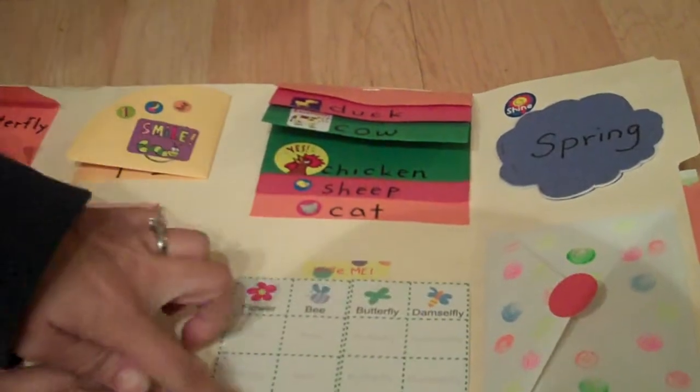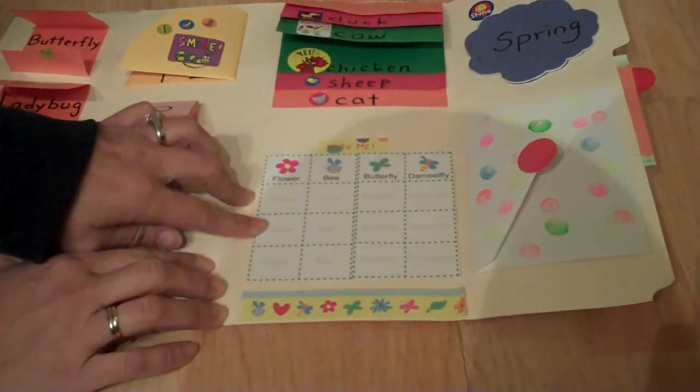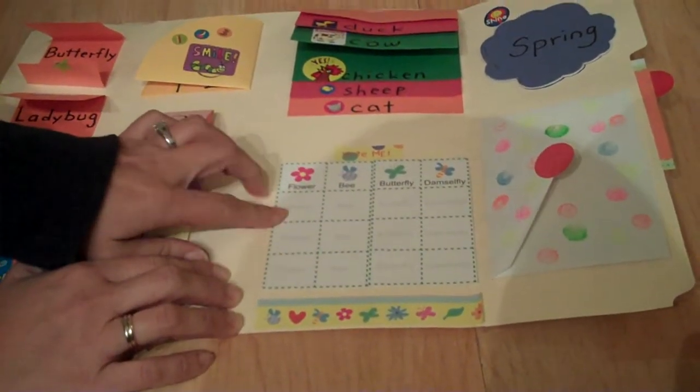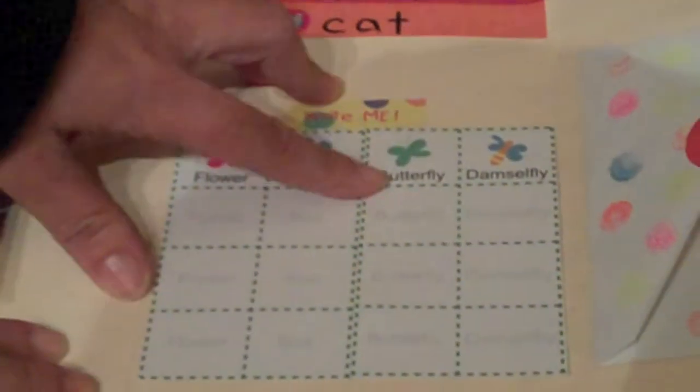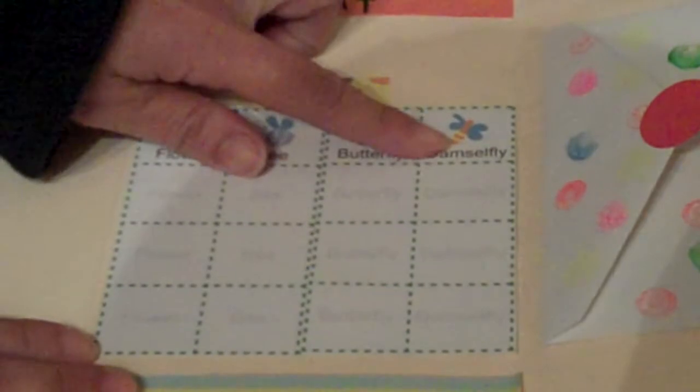Here this part you can practice your writing. Flower, and bee, butterfly, and dragonfly.